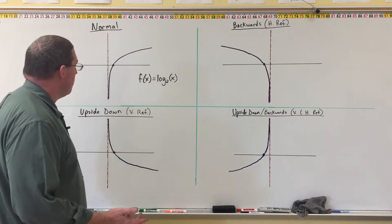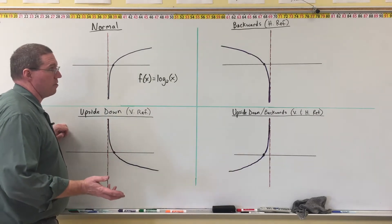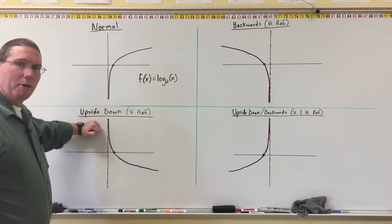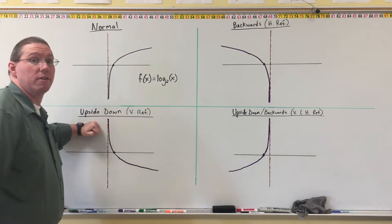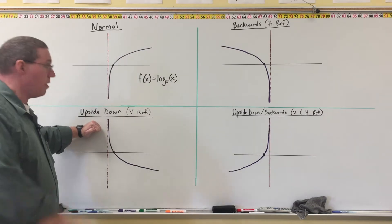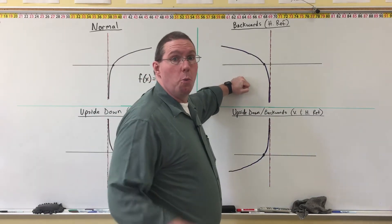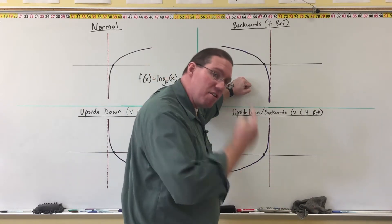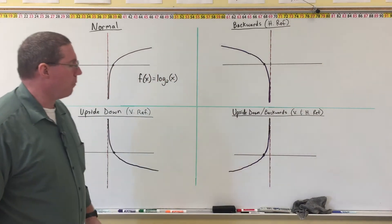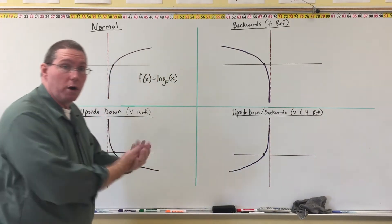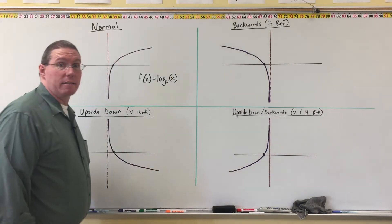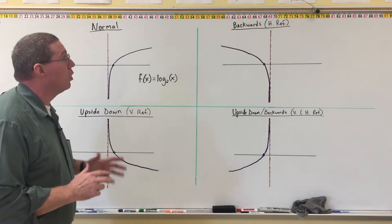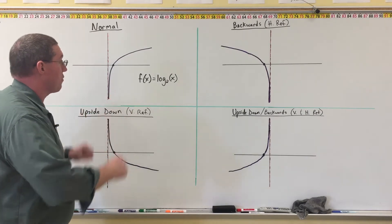What I'm going to show you in a few minutes is where to put the negatives. What we learned when we did exponential functions is that the upside down exponential — we put a negative on the front of the function. Same thing here. When we learned about backwards, we put the negative on the x inside of parentheses. Same thing here. And then when we did upside down and backwards, we put two negatives on — one on the front and one on the x. Same exact thing here.